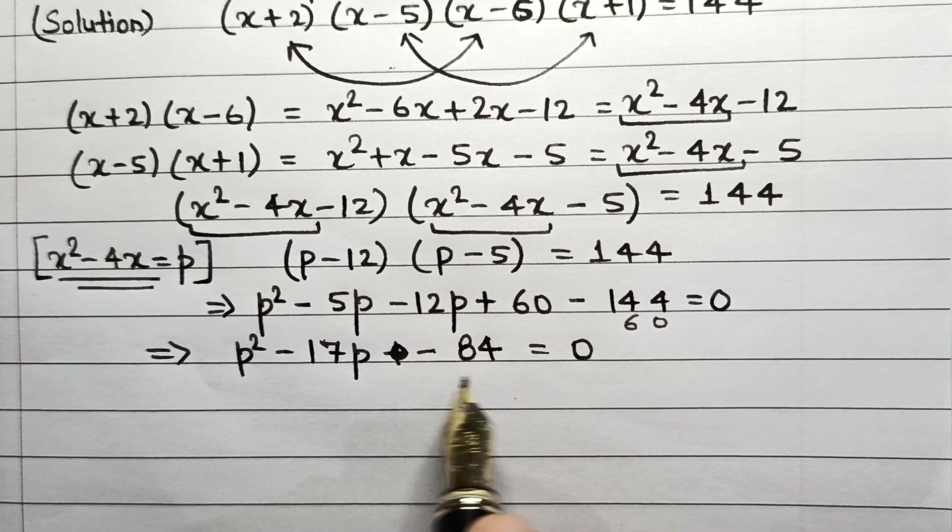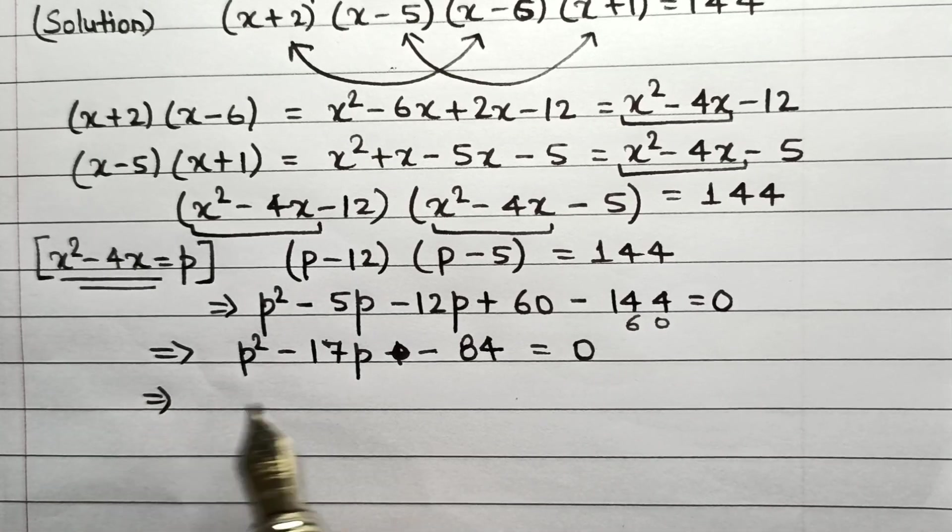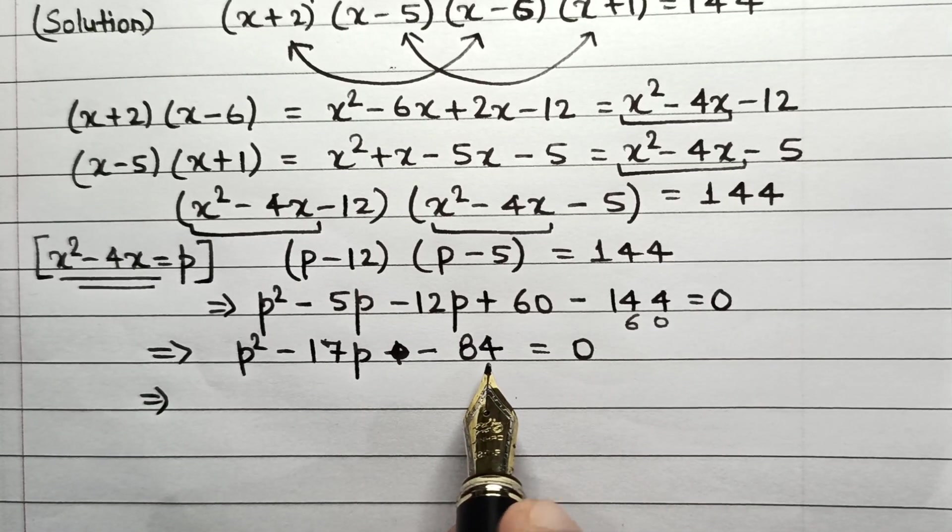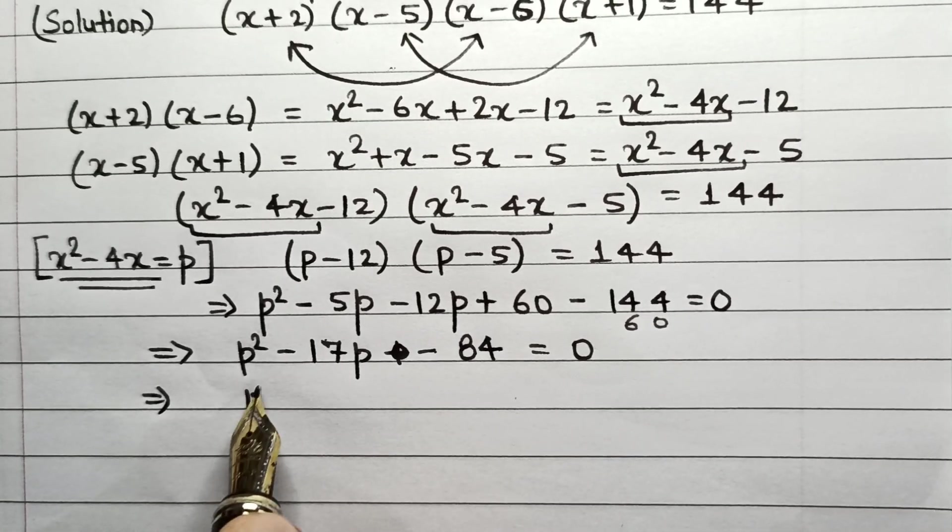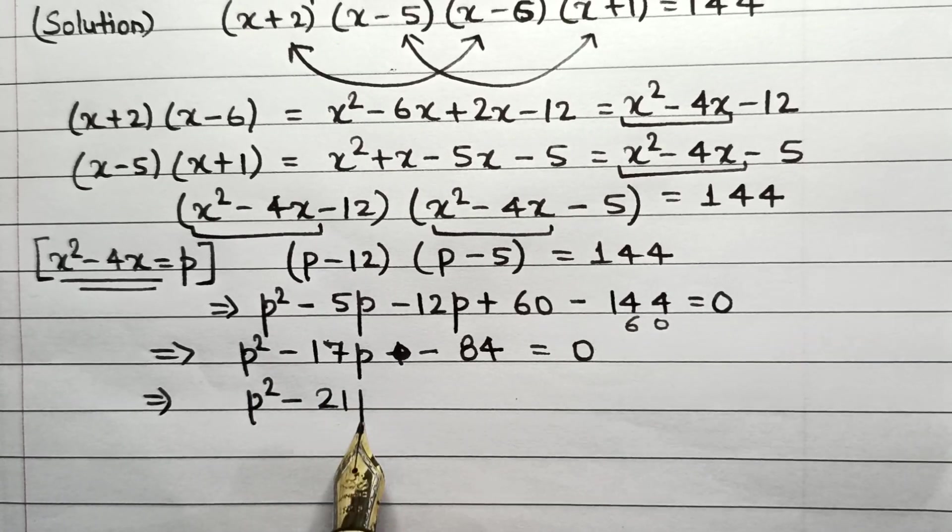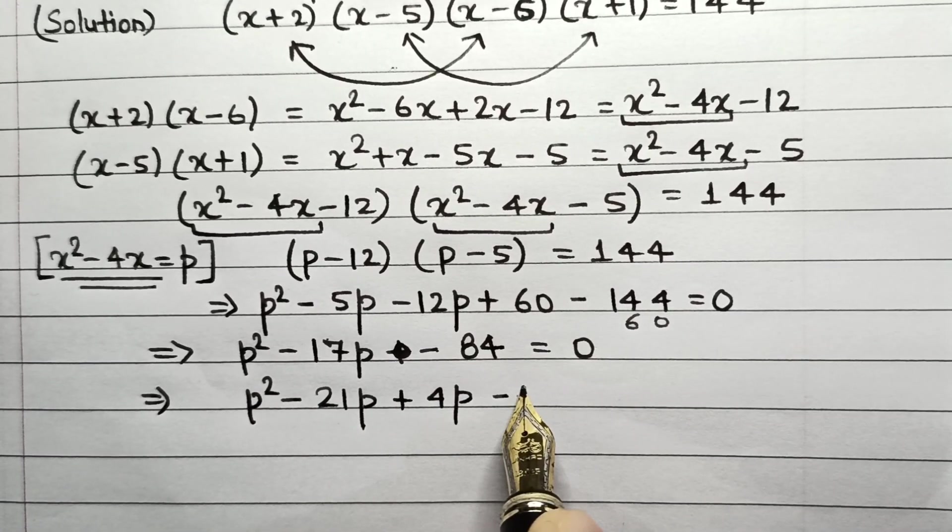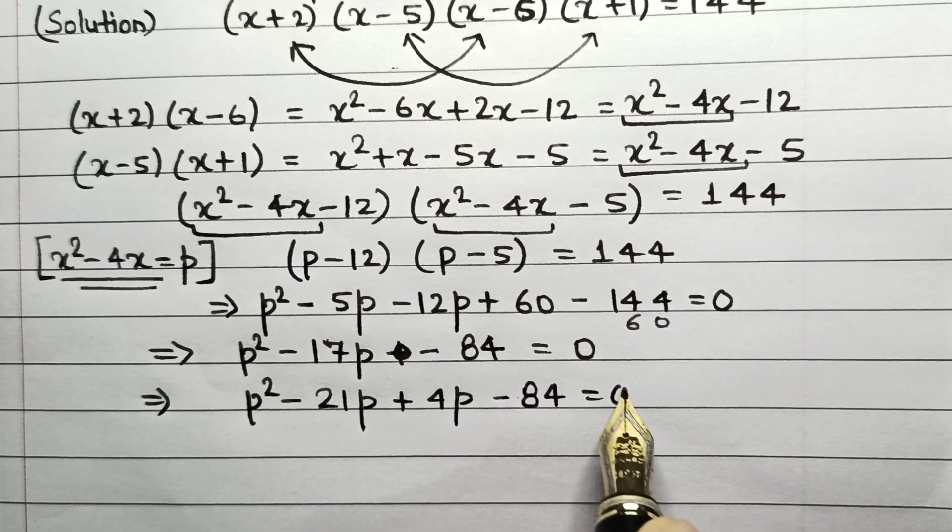So now we will have to figure out a way to factorize this part here. So as we know, 84 can be written as 21 multiplied by 4. So p² - 21p + 4p - 84 = 0.